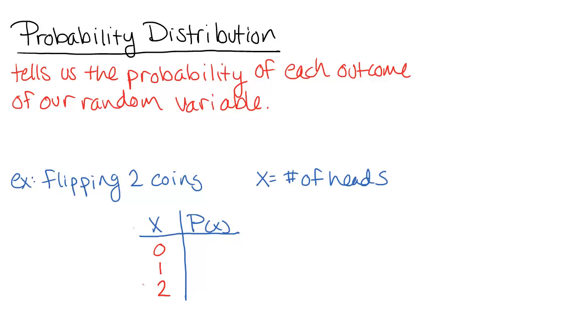And our probability distribution would say, okay, for each of these outcomes, what is the probability? If you write out the sample space for flipping two coins, the probability of getting zero heads is one-fourth, the probability of getting one head is one-half, and the probability of getting two heads is one-fourth. So this would be our probability distribution for this particular random variable.